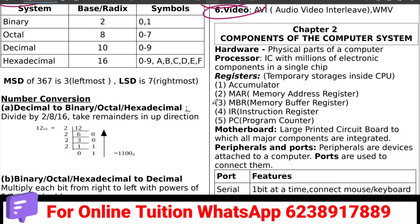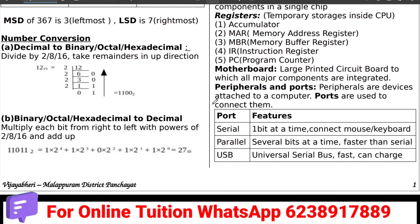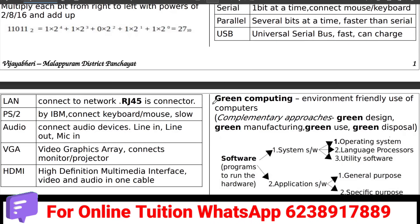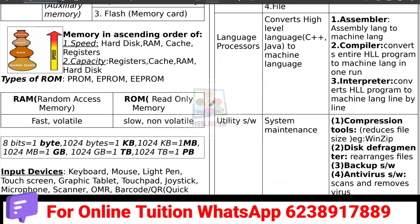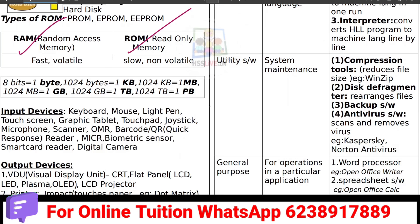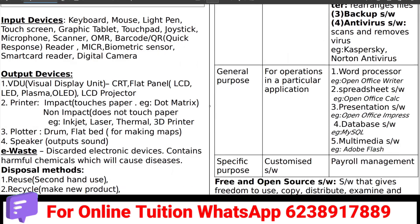Chapter 2: Components of Computer. What is hardware? What is a processor? This is a two-mark question. What is memory? What is primary memory and secondary memory? What is the difference between the two? The difference between RAM and ROM, in terms of input devices and output devices.